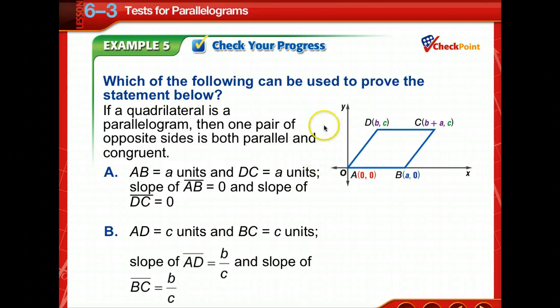Which of the following can be used to prove the statement below? I'm going to let you pause, study the figure and the answers, and you choose the best one and come back and check your answer. I chose A because notice AB is A units long. It goes from 0 to A. Also, DC is A units long. It goes from B to B plus A. So we have, and we've got the same slope. Both have a slope of 0. So this is what we need to prove that it's a parallelogram.